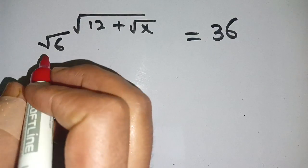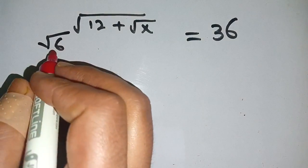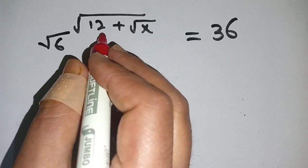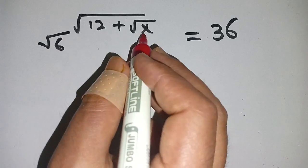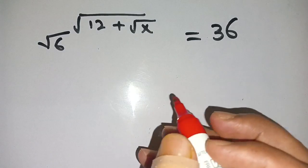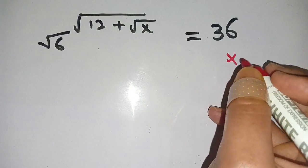Everyone, in today's video we are going to solve this problem: square root of 6 to the whole power of square root of 12 plus square root of x is equal to 36. We have to find the value of x.